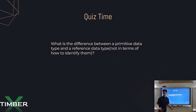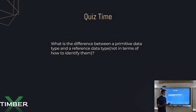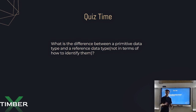So what actually is the difference between primitive type and reference data type? The basic difference between the two is that primitive holds values, whereas reference data types hold values as well as functions on top of those values.